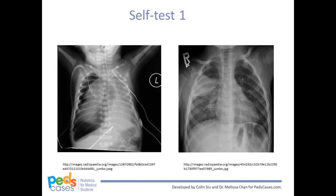This marks the end of our video on an approach to interpreting pediatric chest x-rays. The following slides are a quick self-test for interpreting pediatric chest x-rays. A chest film will be presented, after which you will have approximately 10 seconds to think of your diagnosis — feel free to pause the video if you need more time. After 10 seconds, the pathology and diagnosis will be given. Six chest films will be presented for the self-test, followed by a list of online resources for further information on pediatric chest x-rays.